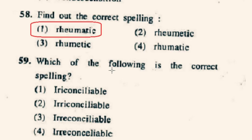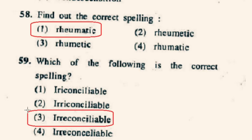Question number 59: Which of the following is the correct spelling? The correct spelling of irreconcilable is given in option 3rd, which means impossible to reconcile — in Hindi: asangat, paraspar virodhi, bemil, or kattarvirodhi.